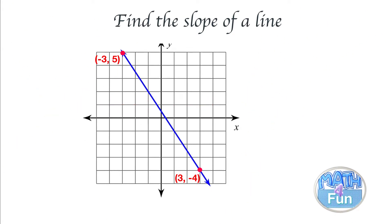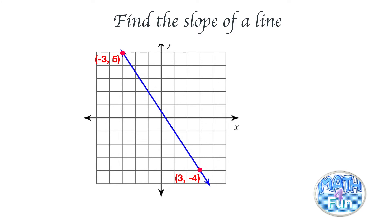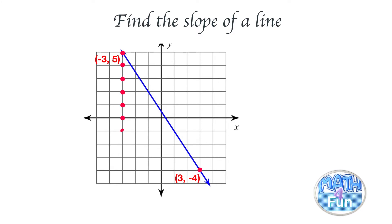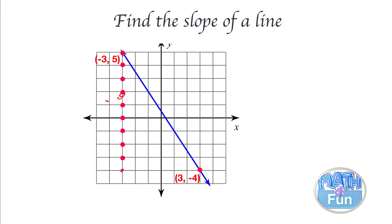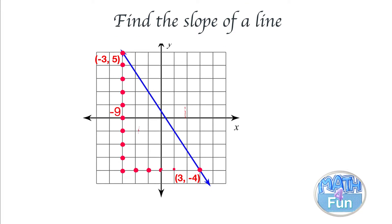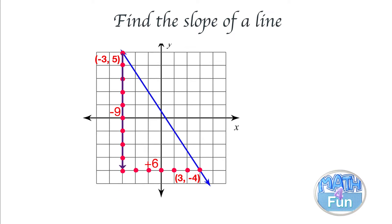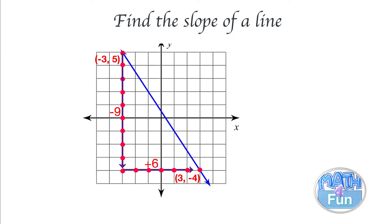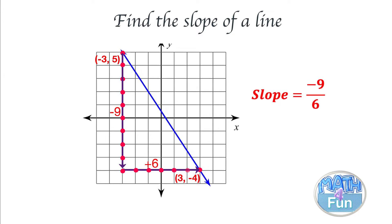From the upper point to the lower point, we count downward: one, two, three, four, five, six, seven, eight, nine — and then to the right: one, two, three, four, five, six. So down counts as negative nine and to the right counts as positive six, giving us negative nine over six.